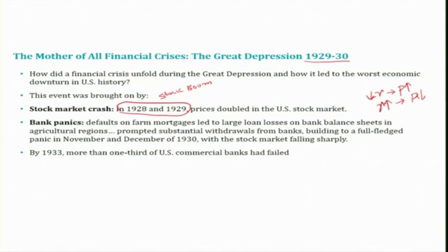Further, there were other related aspects that also happened in the US. One of them was that there were many defaults on farm mortgages. In parallel to the stock market crash, a bank panic also emerged, especially in the agriculture sector, where defaults on farm mortgages led to large loan losses on bank balance sheets in agricultural regions. This prompted substantial withdrawals from banks, building into a full-fledged panic in November and December of 1930 with the stock market falling sharply.